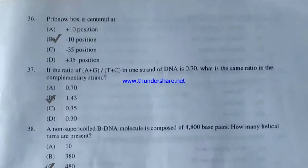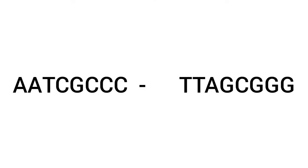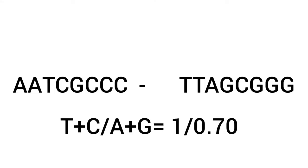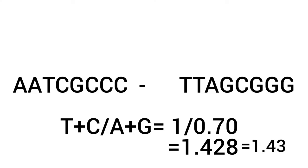Question 37: If the ratio of (A+G)/(T+C) in one strand of DNA is 0.70, what is the same ratio in the complementary strand? Taking strand A-A-T-C-G-C-C-C, its complement is T-T-A-G-C-G-G-G. The ratio (A+G)/(T+C) in the original strand is 0.70, which equals 0.70/1. In the complementary strand, the ratio is the inverse: 1/0.70 = 1.428, which we can round to 1.43.